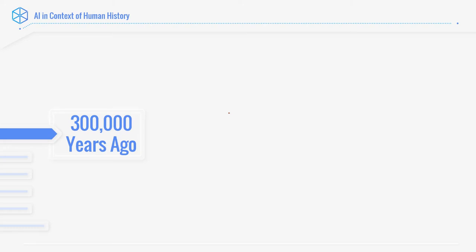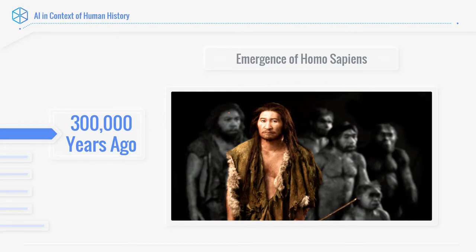Around 300,000 years ago, that's when the emergence of Homo sapiens happened. The word 'sapien' in Homo sapiens actually stands for 'smart.' Look at the confidence of our species — we have named ourselves the smart species. We evolved from apes and became bipedal. This was the emergence of Homo sapiens.